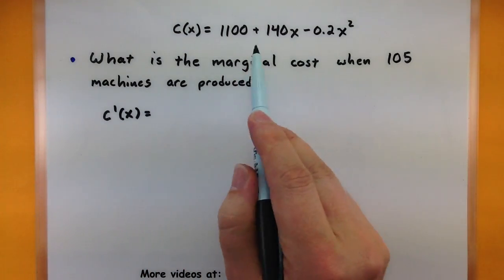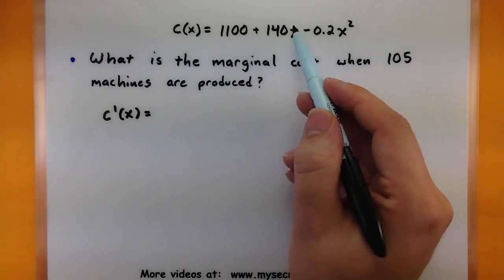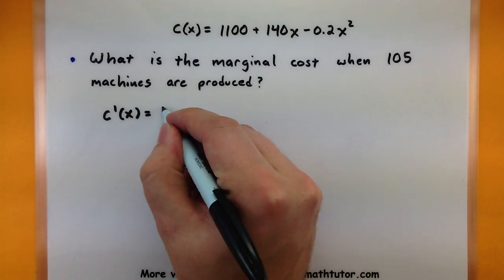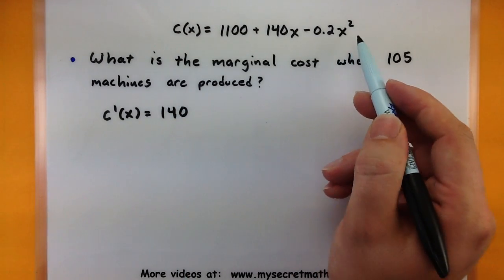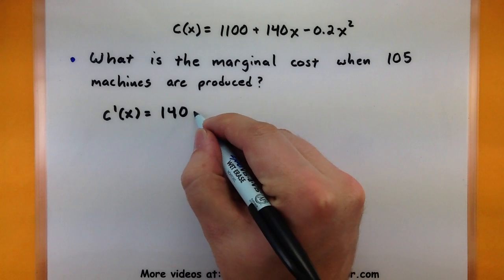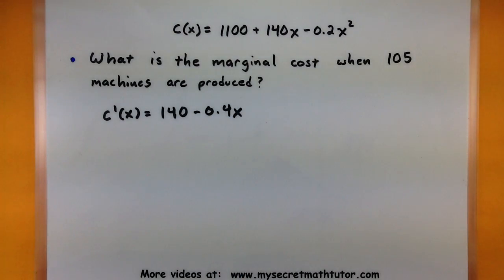So we just simply take the derivative of this function here. Derivative of a constant would go to zero. Derivative of 140x would be 140. And the derivative of negative 0.2x squared, well we'd drop down the two and get 0.4x. So that looks pretty good.